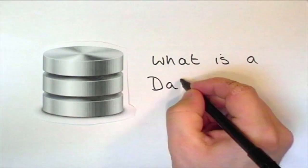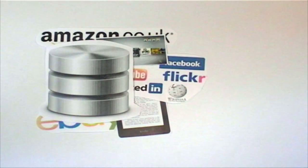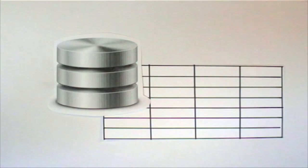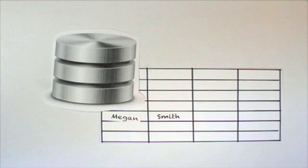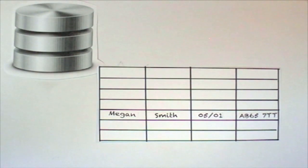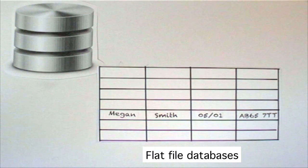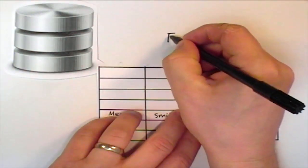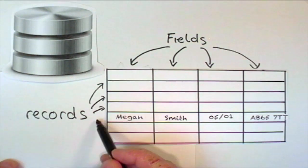So what is a database? Is it just a random collection of stuff all squeezed in together? No, databases are organized. Databases have a structure and all the data we store in them fits into this structure. Very simple databases are called flat file databases. They store data in columns of fields and rows of records.